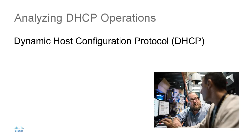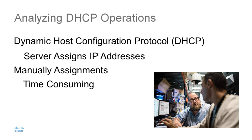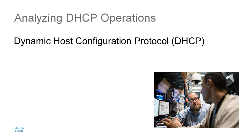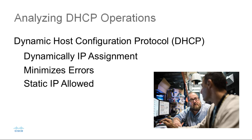Dynamic Host Configuration Protocol, or DHCP, uses a server to automatically assign a range of IP addresses to network devices. In the past, devices were manually configured with specific or static IP addresses. This process was not only time-consuming, but also resulted in user error causing multiple devices to be configured with duplicate addresses. DHCP dynamically assigns IP addresses on demand, which minimizes the chances of overlapping addresses. Even though static IP addresses can still be assigned, most organizations rely on DHCP to simplify and standardize access to the network.